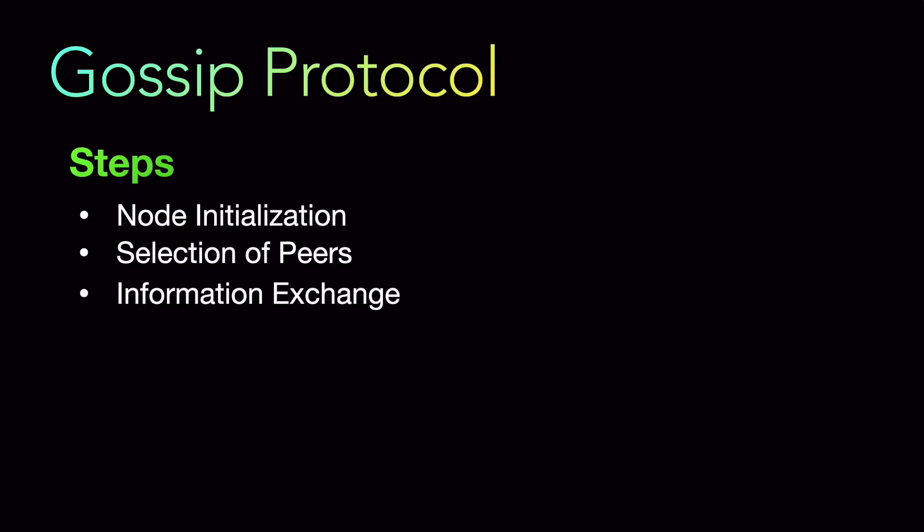The third step is information exchange — the selected nodes exchange information, which could be data, status updates, or any kind of relevant information. Then comes propagation: the nodes incorporate the information they receive, then select new random peers and repeat the process. Finally, there is repetition — this entire process repeats, spreading information until all servers and all nodes in the network have the updated information.